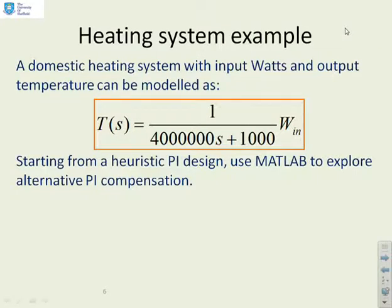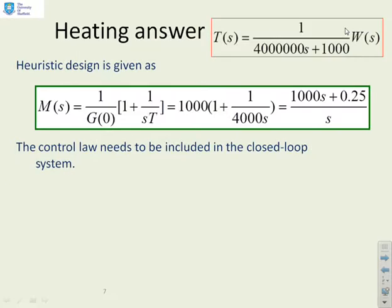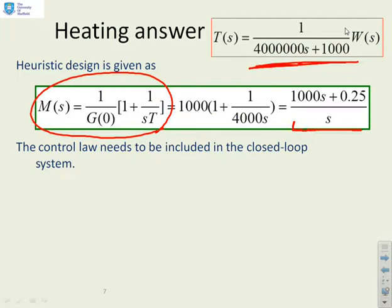Second example. This one represents a domestic heating system. And again, you'll see we've given you a model to represent the domestic heating system with T, the temperature, and W, the power input. So here's a typical answer. My heuristic design, again, I've shown you I'm using the formula 1 over G of 0 into 1 plus 1 over ST. If I extract those numbers from this model up here, then my compensator is going to be this, 1000S plus 0.25 over S. So a KP of 1000 and an integral of 0.25.